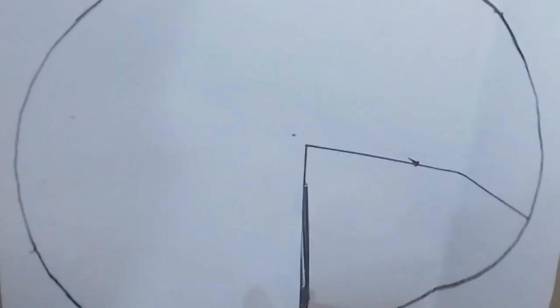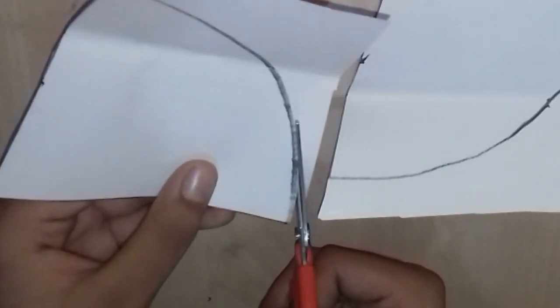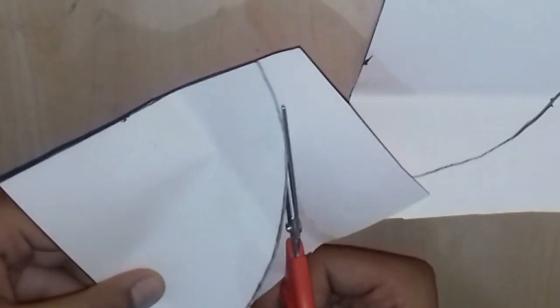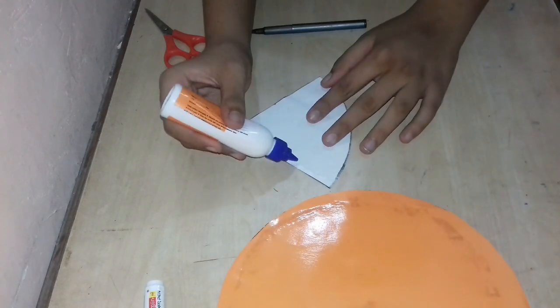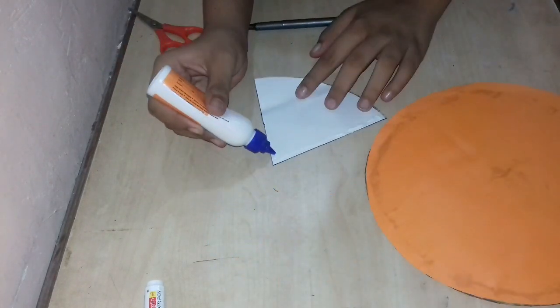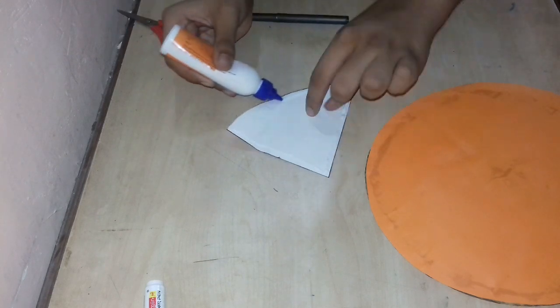This represents the column of oxygen in the air. And will cut it. Friends, now paste the oxygen column on the circle.